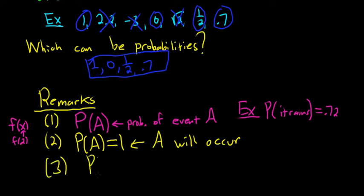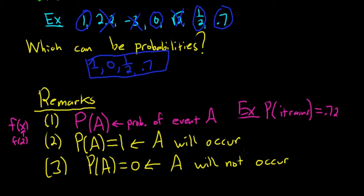If you have the probability of A equal to 0, this means it's impossible. So A will not occur. It's definitely not going to happen. So A will not occur. Okay? So if it's equal to 1, it's going to happen. If it's equal to 0, it cannot happen. It's impossible.